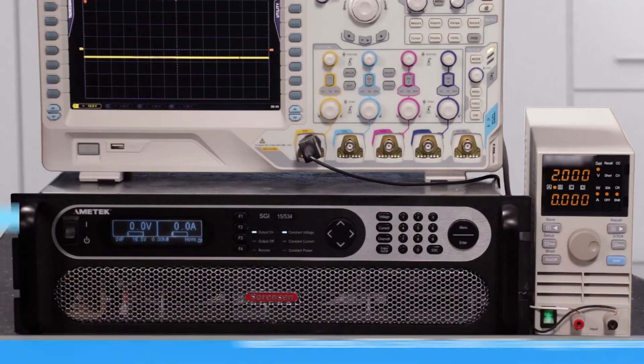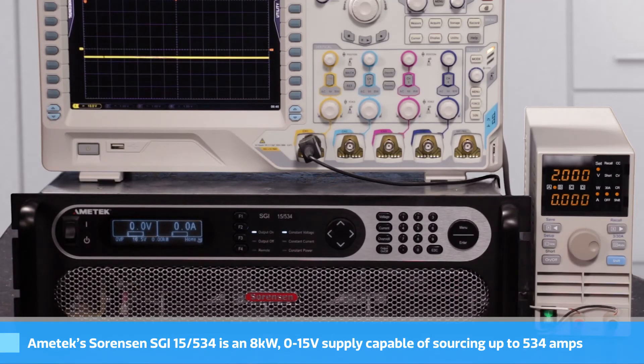Sorensen offers 90 different voltage and current configurations, including a 3U model that will do up to 10 volts and 1200 amps. The supply I have is the SGI 15534. It's an 8 kilowatt 0-15 volt supply capable of sourcing up to 534 amps.